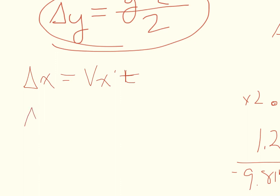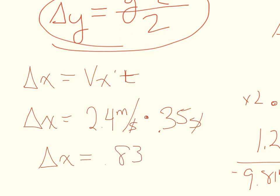Our delta x we don't know but our velocity in the x direction is 2.4 meters per second and our time is 0.35 seconds. Our seconds end up cancelling. If you multiply these two together you get 0.83 meters as our total distance.